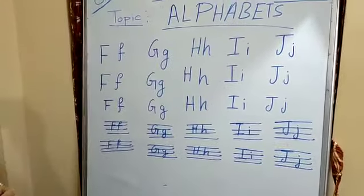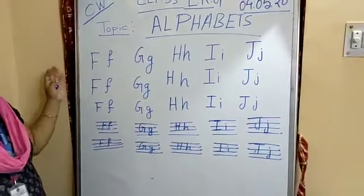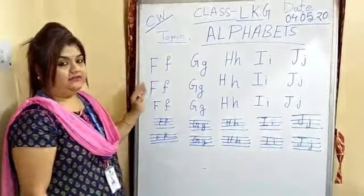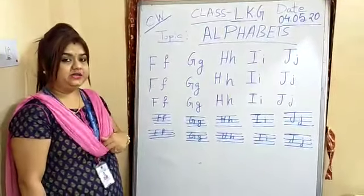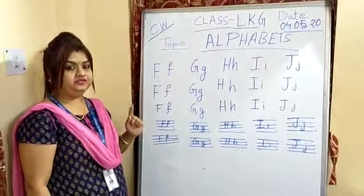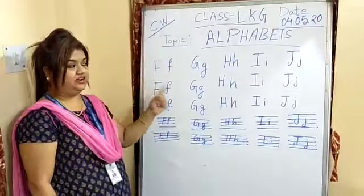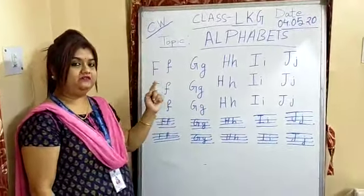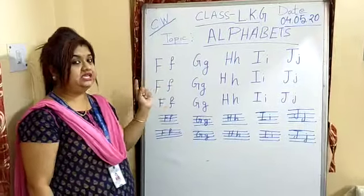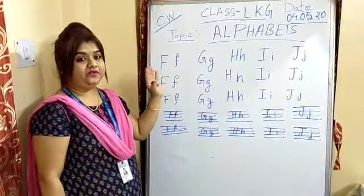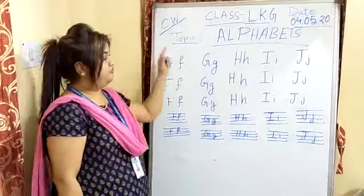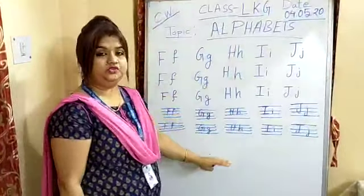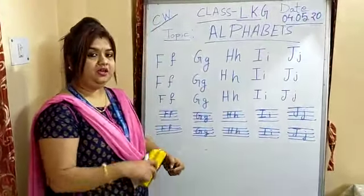Okay. So in your copy you have to write like this. Each alphabet you have to practice five times. In your copy you have to write each alphabet five times — A, B, C, D, E, F, G, H, I, J — up to J, five times you have to write. Like five times you have to write A. Full page you have to do, children. Practice this.